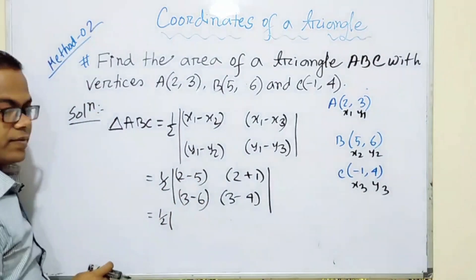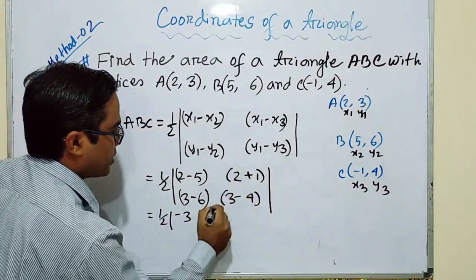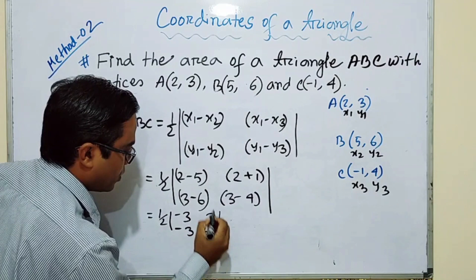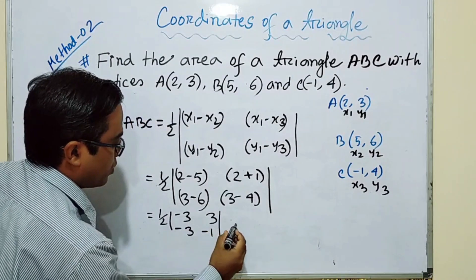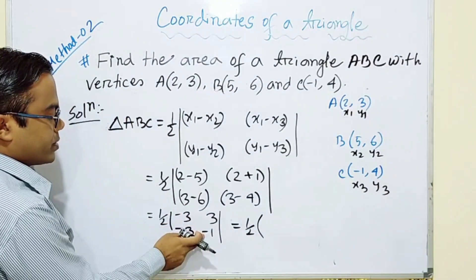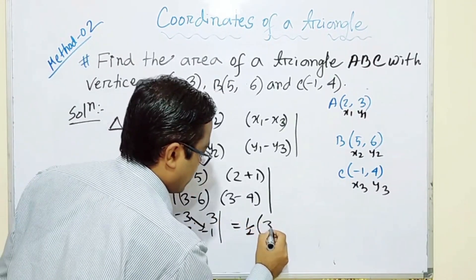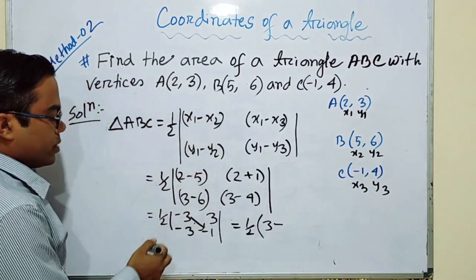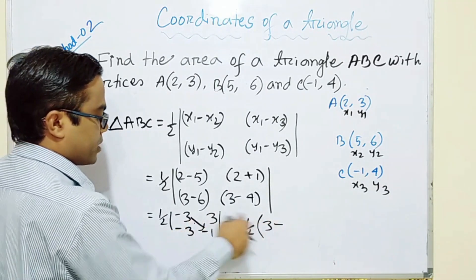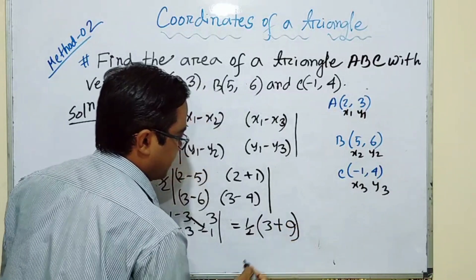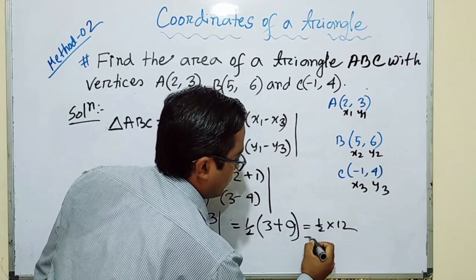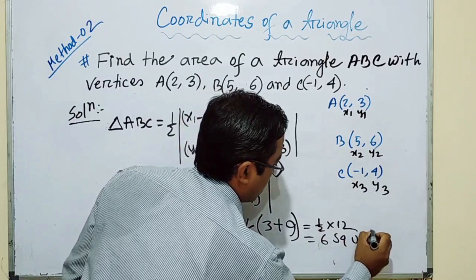Computing the differences: 2-5 = -3, 2+1 = 3, 3-6 = -3, 3-4 = -1. Upward to downward: (-3)×(-1) = +3. The other diagonal: 3×(-3) = -9, but minus minus gives plus 9. So half of |3 + 9| = half of 12 = 6 square units. The same answer — method 2 is simply a simpler formula.